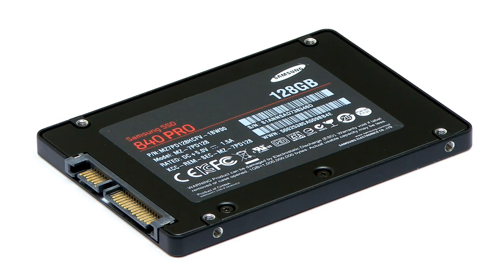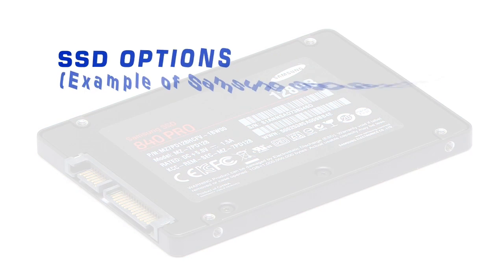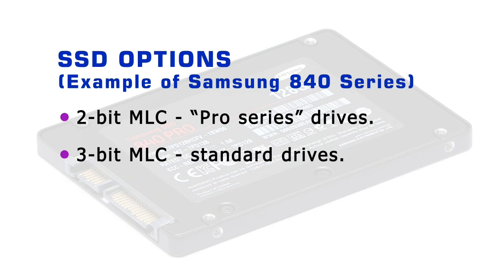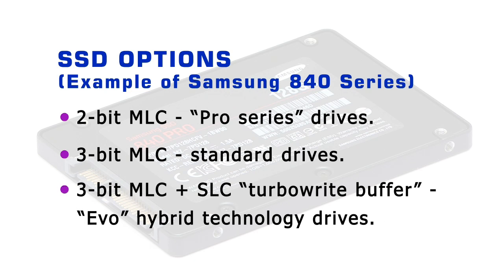When shopping for a new drive, purchasers should carefully consider the kind of technology on which an SSD is based. Samsung, for example, sell their latest 840 series SSDs in EVO, Standard, and Pro models. The Pro series uses 2-bit MLC, making them faster and more durable, if also more expensive per gigabyte and more limited in capacity. The standard 840 drives use 3-bit MLC, while the latest EVO models also use 3-bit MLC but have a 3 gigabyte turbo-write buffer of SLC memory to which data is initially written, hence increasing drive speed, if not durability.